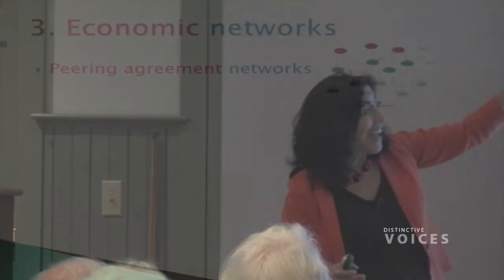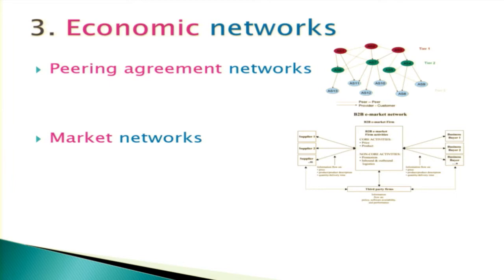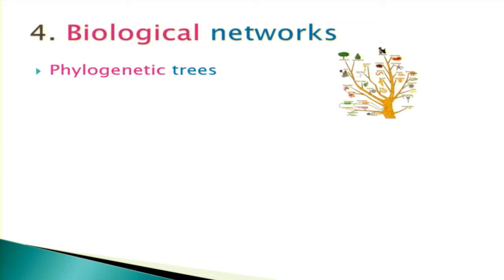There are Twitter microblogging networks — I've worked with grad students and postdocs writing papers on the mathematics of how Twitter networks form. Economic networks include peering agreement networks. On the AS internet, there are three tiers: top-tier systems can send to others without paying; second-tier systems pay the top tier if they use those connections; and the third tier pays both. This creates interesting routing and cryptographic problems based on economic incentives.